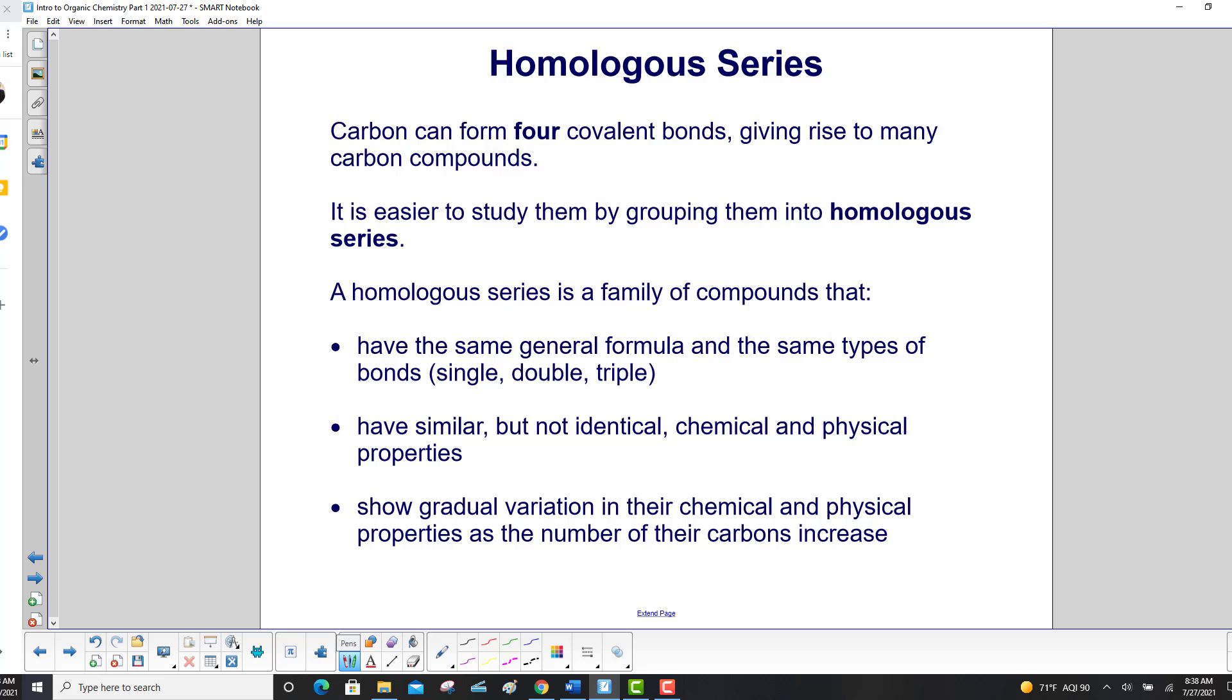Carbon can form covalent bonds, giving rise to many carbon compounds. It is easier to study them by grouping them into homologous series. A homologous series is a family of compounds that have the same general formula and the same types of bonds: single, double, and triple. They have similar but not identical chemical and physical properties, and show a gradual variation in their chemical and physical properties as the number of their carbons increases.